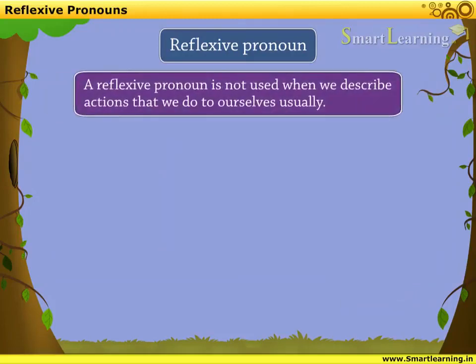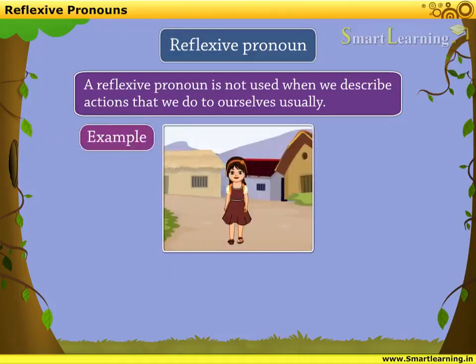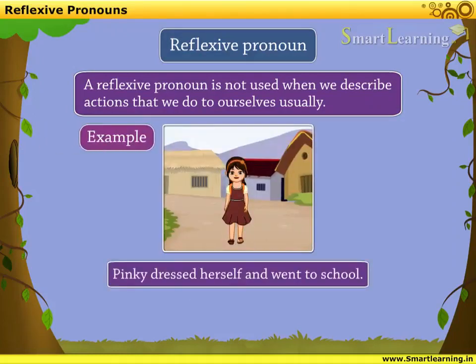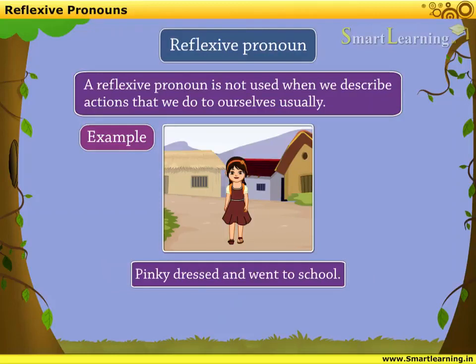Also, a reflexive pronoun is not used when we describe actions that we do to ourselves usually. For example: Pinky dressed herself and went to school. Here, 'herself' is not required in this sentence as we are describing an action done by Pinky to herself as usual. Hence, the sentence should be: Pinky dressed and went to school.